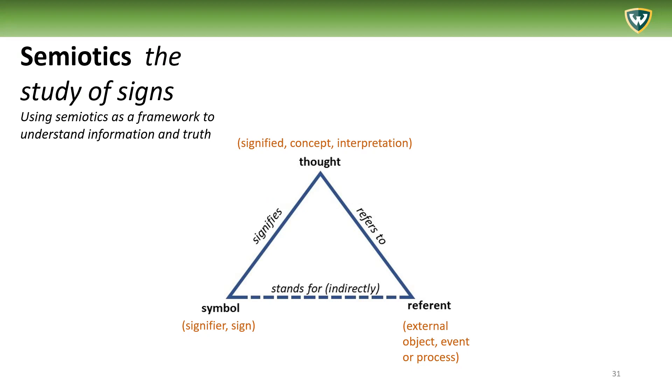There are three main elements: the symbol, which is also called the signifier or sign. There's always going to be a bunch of different terms for the same thing. So symbol, signifier, or sign.